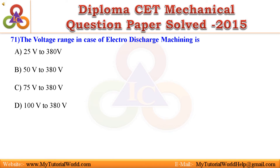Question 71. The voltage range in case of electro-discharge machining is: A. 25V to 380V, B. 50V to 380V, C. 75V to 380V, D. 100V to 380V. Answer is 50V to 380V.